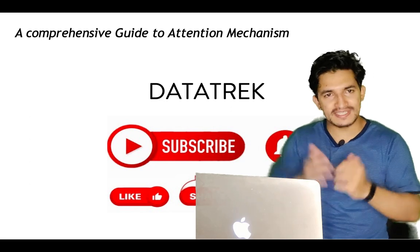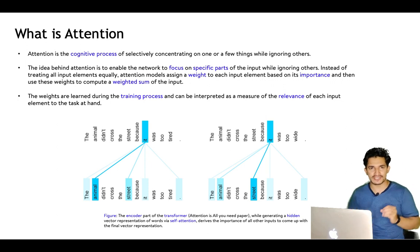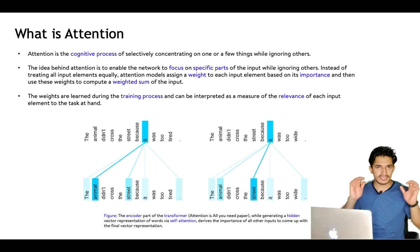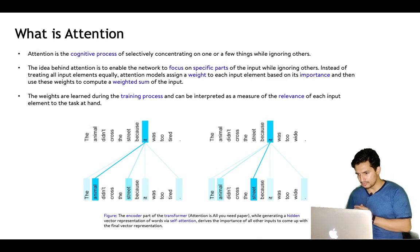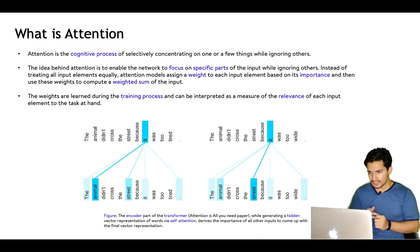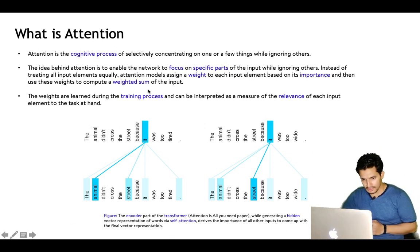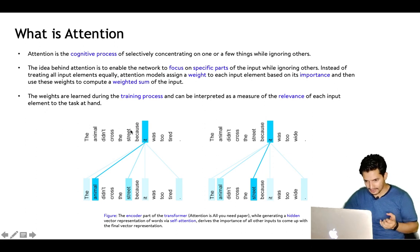So how does it work? What is attention? Attention is a cognitive process of selectively concentrating on one or few things while ignoring others — that is what we mean by being attentive. It cognitively selects part of the inputs and ignores others. The idea behind attention is to enable the network to focus on a specific part of the input while ignoring others. Instead of treating all input elements equally, an attention model assigns a weight to each input element based on its importance, then uses these weights to compute a weighted sum of the inputs. The weights are learned during training and can be interpreted as a measure of relevance of each input element to the task at hand.